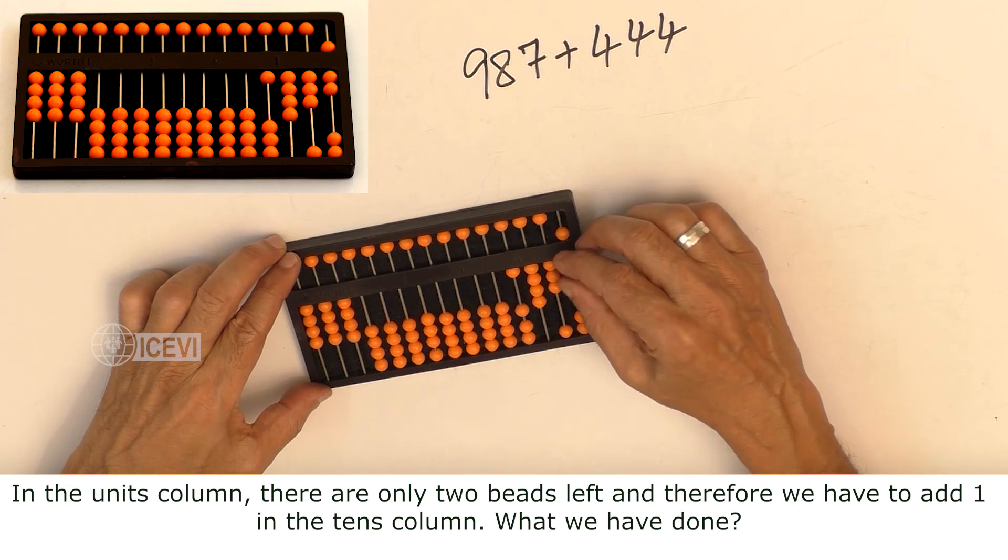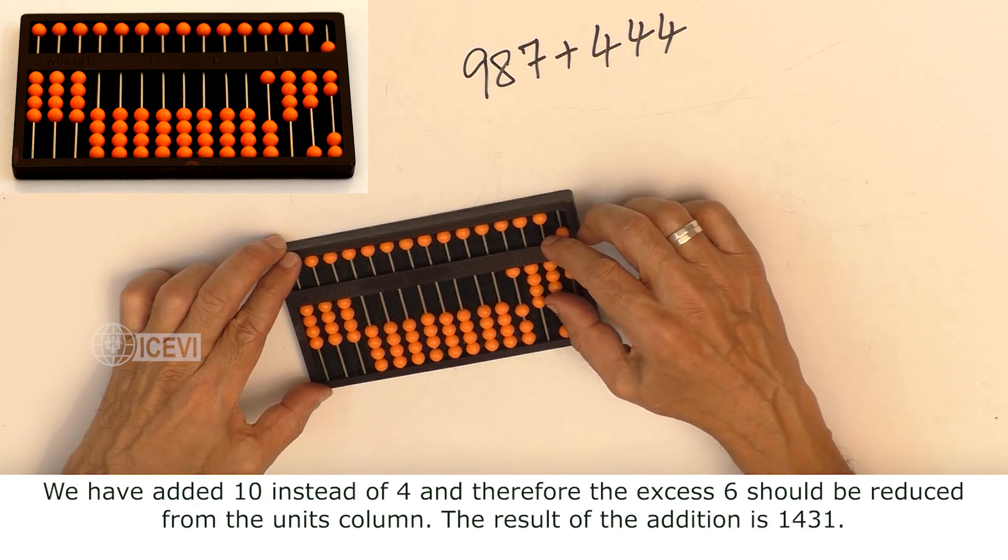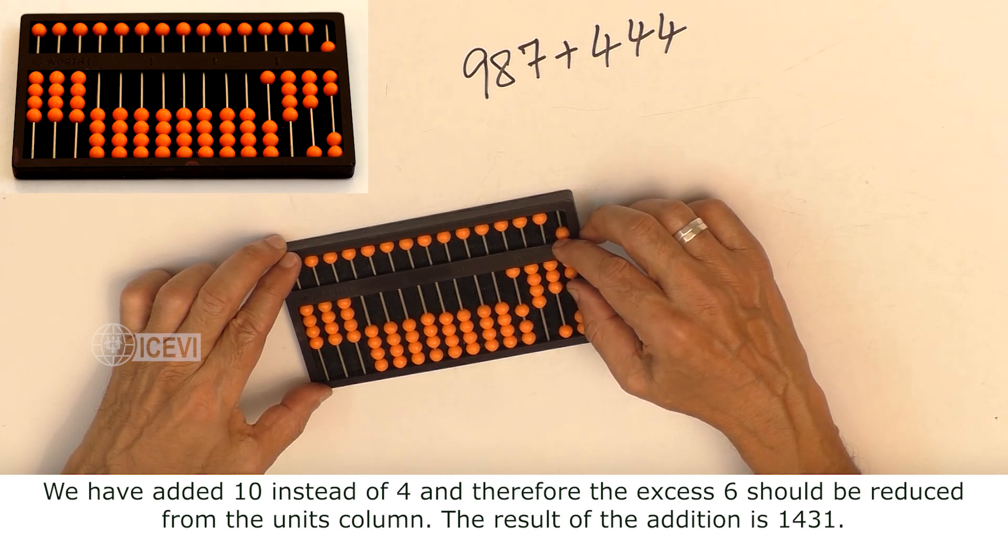What have we done? We have added 10 instead of 4, and therefore the excess 6 should be reduced from the units column.